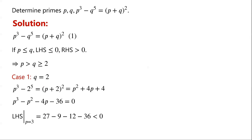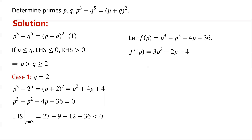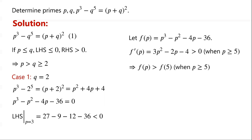That is, if this equation has prime solutions, p must be greater than or equal to 5. We let f of p equal p cubed minus p squared minus 4p minus 36. Then f dash of p equals 3p squared minus 2p minus 4, which is greater than 0 when p is greater than or equal to 5. So f of p is increasing for p greater than or equal to 5.